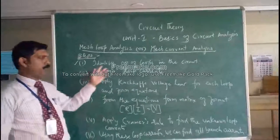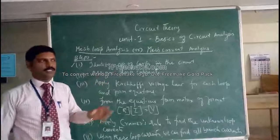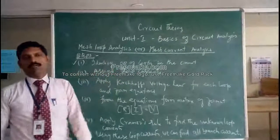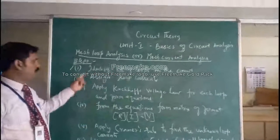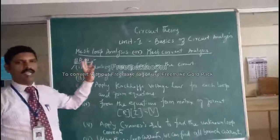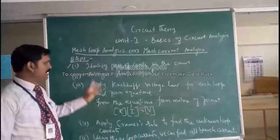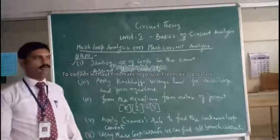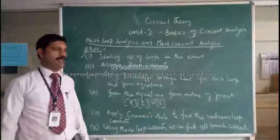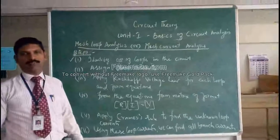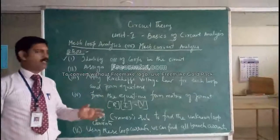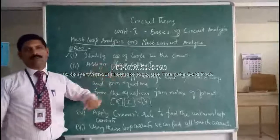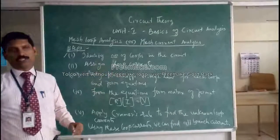For example, if the circuit has three loops, then we have to form three loop equations. So the first step is to identify the number of loops in the circuit. The second step is to assign loop currents — you can give any name: I1, I2, I3. If you take loop 1, you can name its loop current I1.